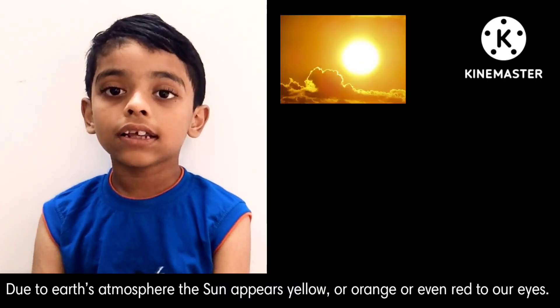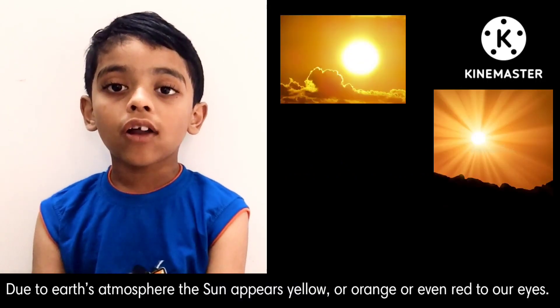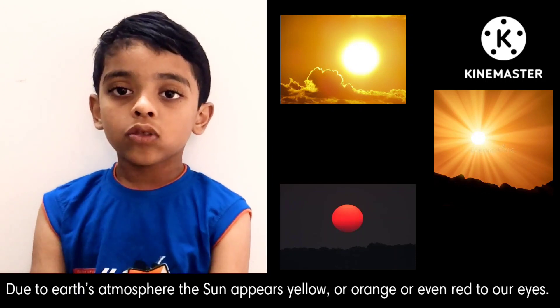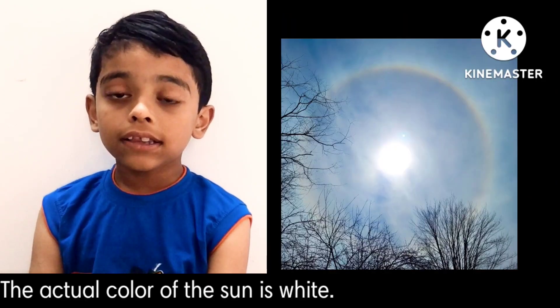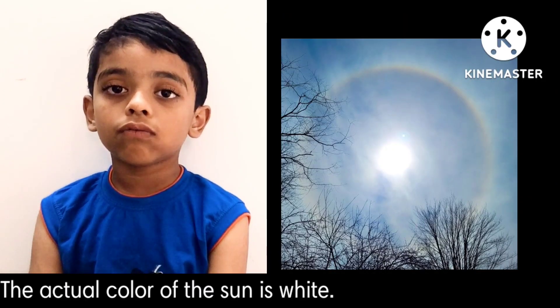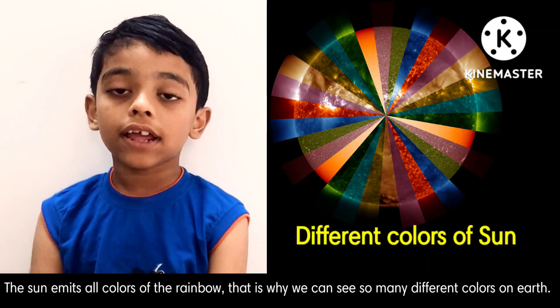What color is the Sun? Due to Earth's atmosphere, the Sun appears yellow or orange or even red to our eyes. But the actual color of the Sun is white.